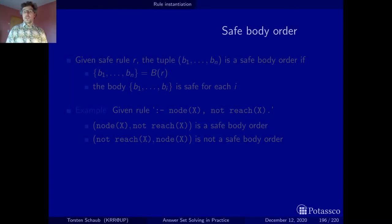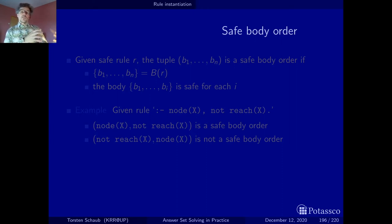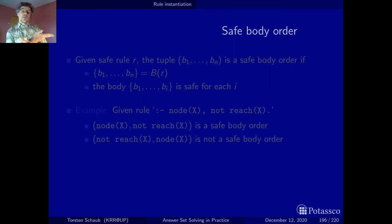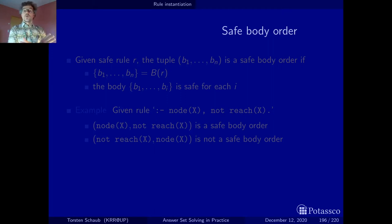The concept of a safe body order allows us to exploit the notion of safety for rule instantiation. Keep in mind that a rule is safe if all its variables occur within the positive body literals. Within the scope of component-wise grounding, you ground component-wise, and when you ground the rules within a component, all the predicates of the positive body literals have been grounded before. So you can get the instantiations for the variables by looking at the atom base built by grounding all the previous components.